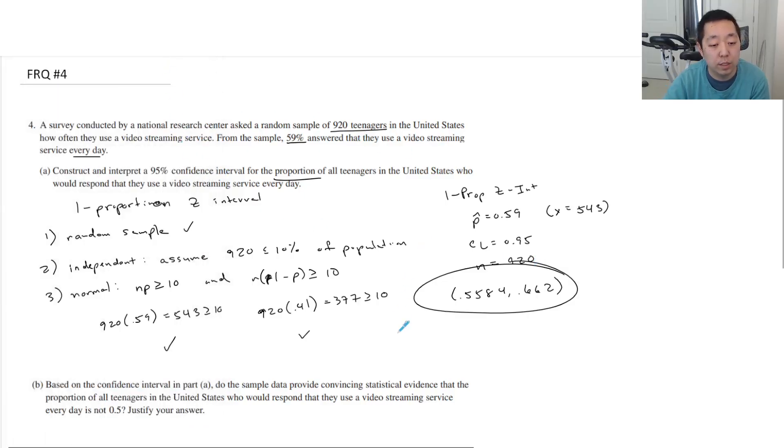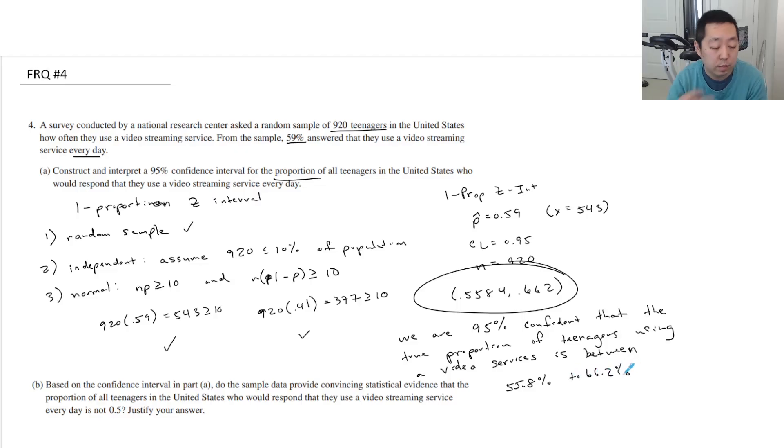And they want constructed and interpreted so that we are 95% confident that the true proportion, seems low to me by the way, of teenagers using streaming services, using a video streaming service, you want to say true proportion, like the population, your streaming services is between 55.8% to 66.2%.